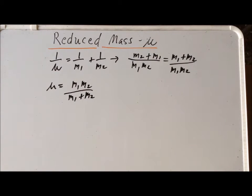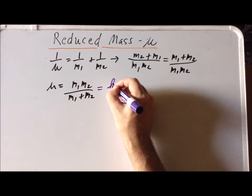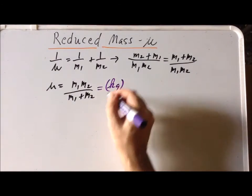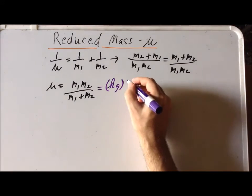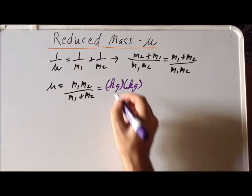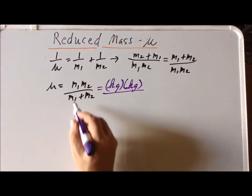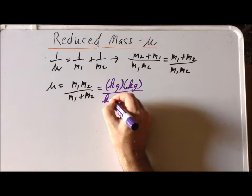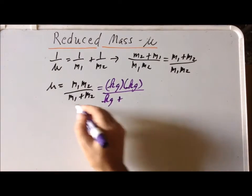What is a useful thing to do at this stage is to show that the units of the reduced mass are what we'd expect them to be. So for example, let's assume that we're going to write the masses in terms of the SI unit, the kilogram. So M1 is going to have units of kilograms. M2 is going to have units of kilograms. So we have kilograms times kilograms in the numerator. Then in the denominator, we have kilograms plus kilograms, because M1 and M2 are each in units of kilograms.